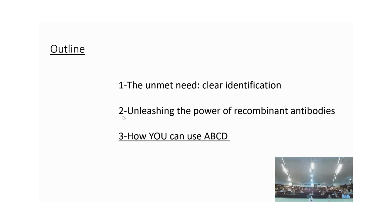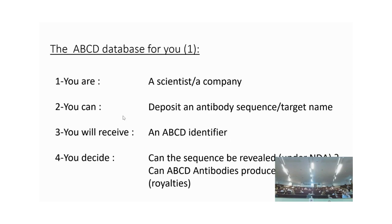How can you use the ABCD database itself? If you're a scientist or a small company, you can deposit an antibody sequence and the target name. We will take your sequence, compare it to all the sequences we have, and if it's already there, we'll tell you it was already deposited by somebody else and provide the ABCD identifier. If it's not there, we give you a new identifier — you will be, for example, CA123.